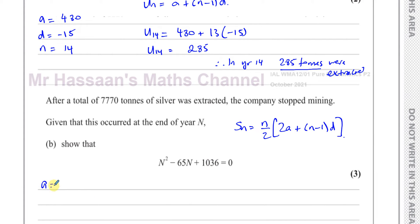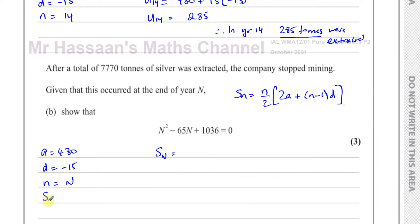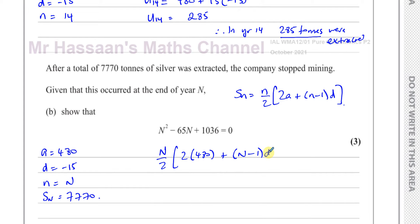We know a = 480, d = −15, and we use capital N for the number of years. We also know the sum equals 7770. So we substitute: (N/2)(2 × 480 + (N − 1)(−15)) = 7770.